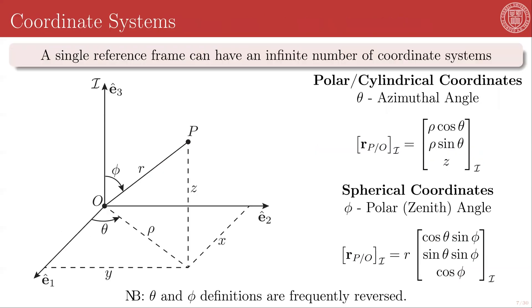As already stated, a single reference frame can have an infinite number of coordinate systems. The Cartesian coordinates are the simplest one. They're the one that maps along the three unit directions defining our frame. But there's two other very convenient coordinate systems that we're going to be coming back to very frequently. So let's point them out here. The first are the polar or cylindrical coordinates.